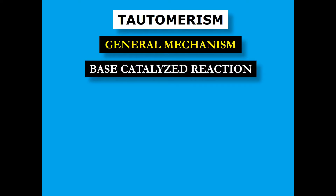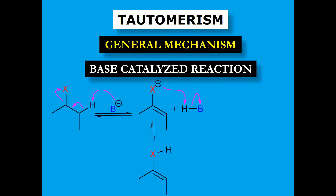We have a general molecule here — a carbon chain with a double bond and an atom X, where X could be oxygen, nitrogen, or anything else. We are looking at the base-catalyzed reaction. A base has the property of abstracting a proton from any molecule, so what this base does is abstract a proton from this molecule, and as a result a negative charge is created here.